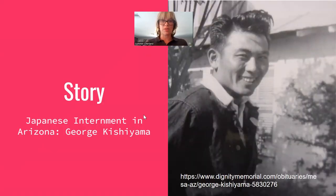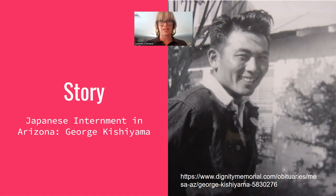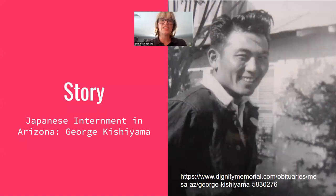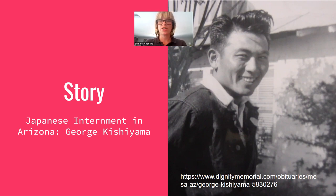Here's an example from our own community: George Kishiyama was one of the founding gardeners famous in Arizona for helping cultivate what became known as the Japanese Flower Gardens on Baseline Road in South Phoenix. Kishiyama was interned at Poston, south of the Gila River. He did eventually return to South Phoenix, and he and the Nakagawas and others became famous florists who grew beautiful rows of flowers along the base of the South Mountains — a direct example of someone from our community who had that internment experience.